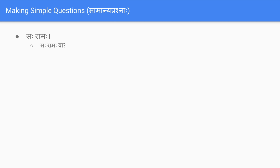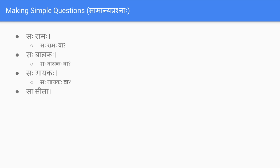The word 'va' is suffixed at the end of a statement to turn it into a yes/no question. For example: 'saha ramaha va' (is he Rama?). Similarly: 'saha balakaha va' (is he a boy?), 'saha gayakaha va' (is he the singer?), 'sa sita va' (is she Sita?), 'sa vaidya va' (is she the doctor?), and 'bhavataha nama Dinesh va' (is your name Dinesh?). The actual statement doesn't change - 'va' is simply added at the end to confirm whether it is true or false.